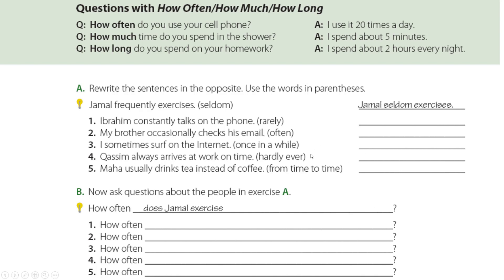Let's move to Exercise A — rewrite the sentence in the opposite using the words in the parentheses. We have adverbs of frequency in the parentheses and we're going to replace them in the sentence. For example: 'Jamal frequently exercises' — we omit 'frequently' and instead use the given word, so it becomes 'Jamal seldom exercises.'